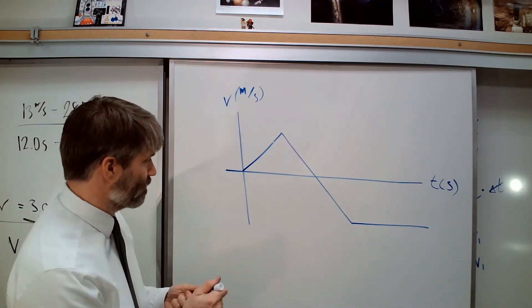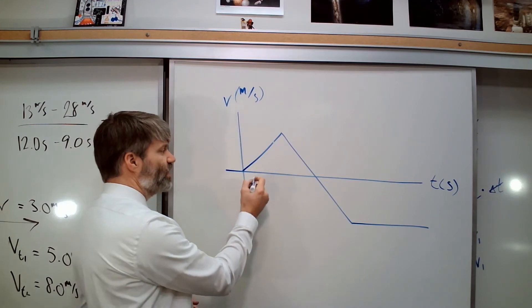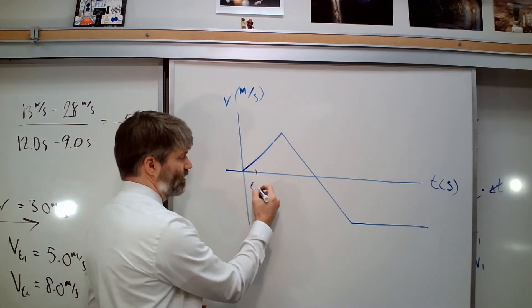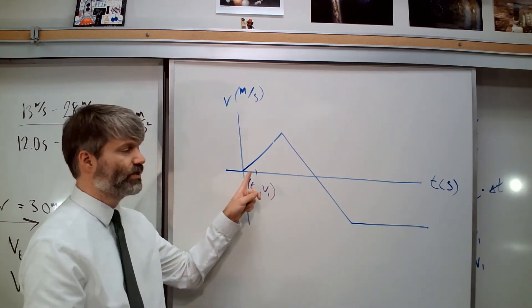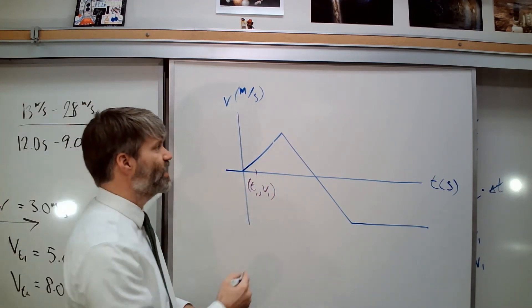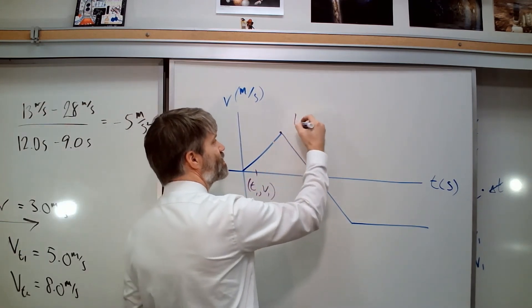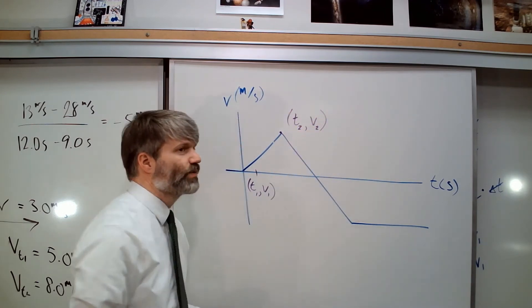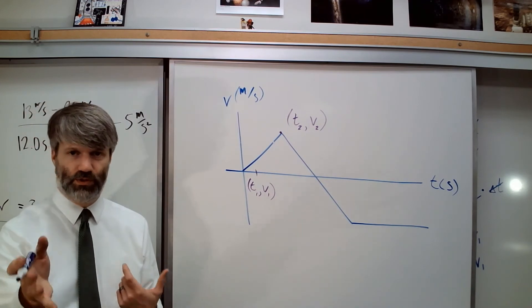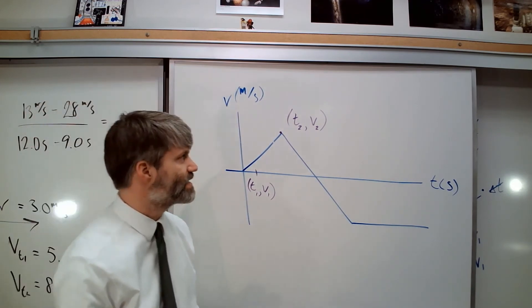But now we'll also note that if this right here is t1v1, or the initial velocity at that time, and then this right here is t2v2, we'll see something about the slope, which you probably already guessed.